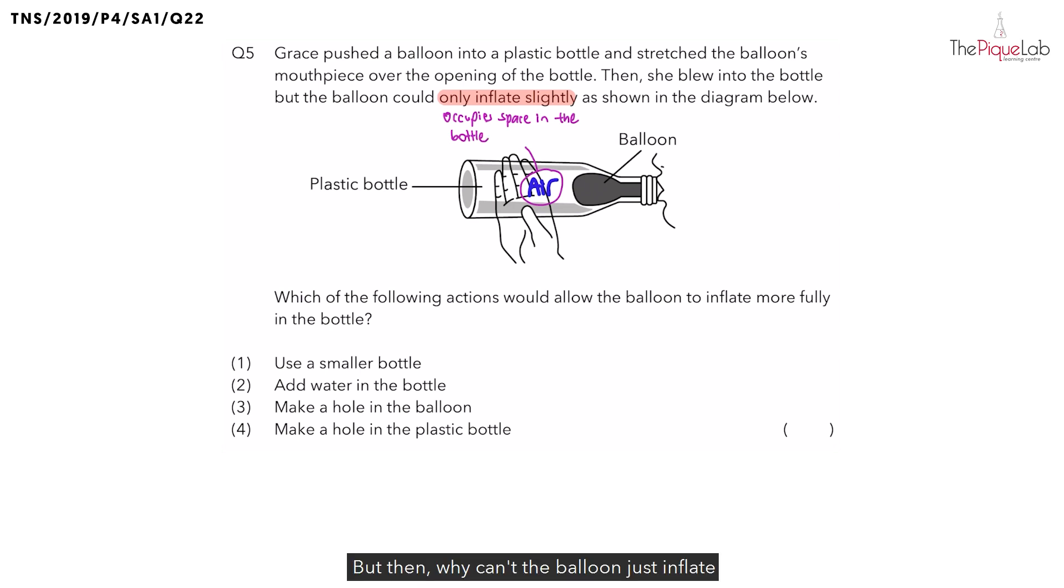But then why can't the balloon just inflate and push the air out? Look at this plastic bottle. Is there any way for air to escape from the bottle? No. So we know that the air not only occupies space in the bottle, but it also cannot escape. And because of that, is there space for the balloon to inflate fully? Definitely not.